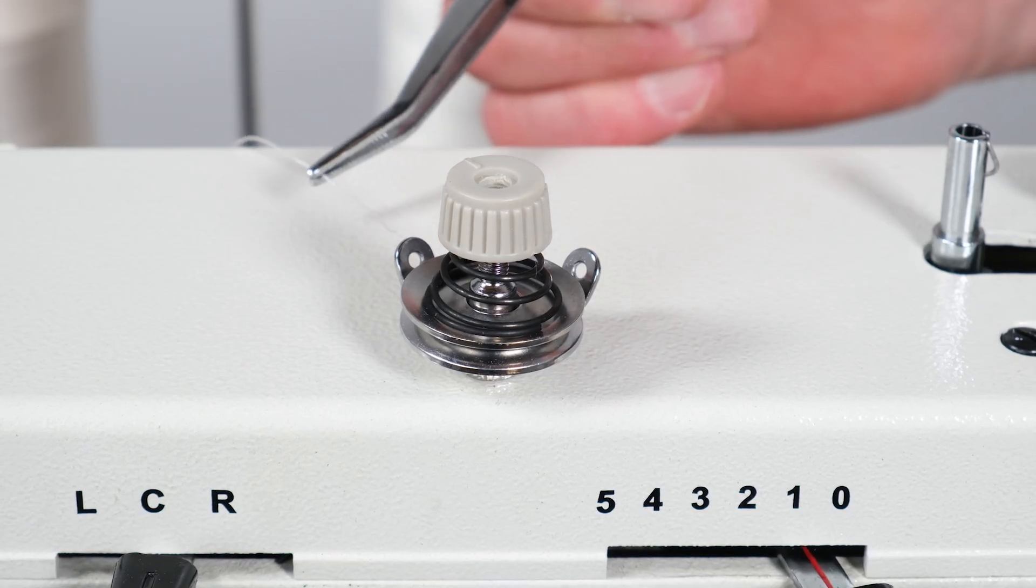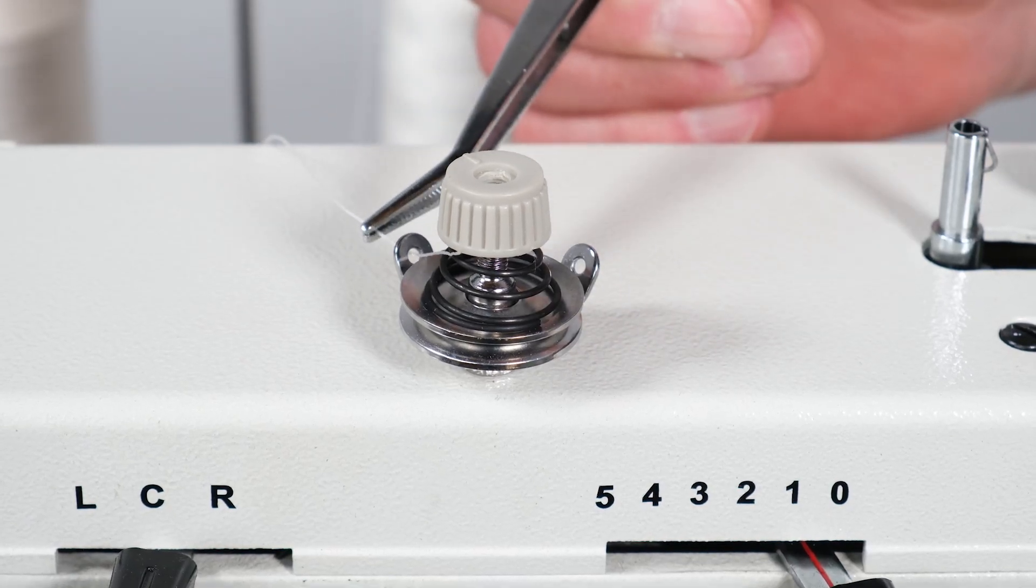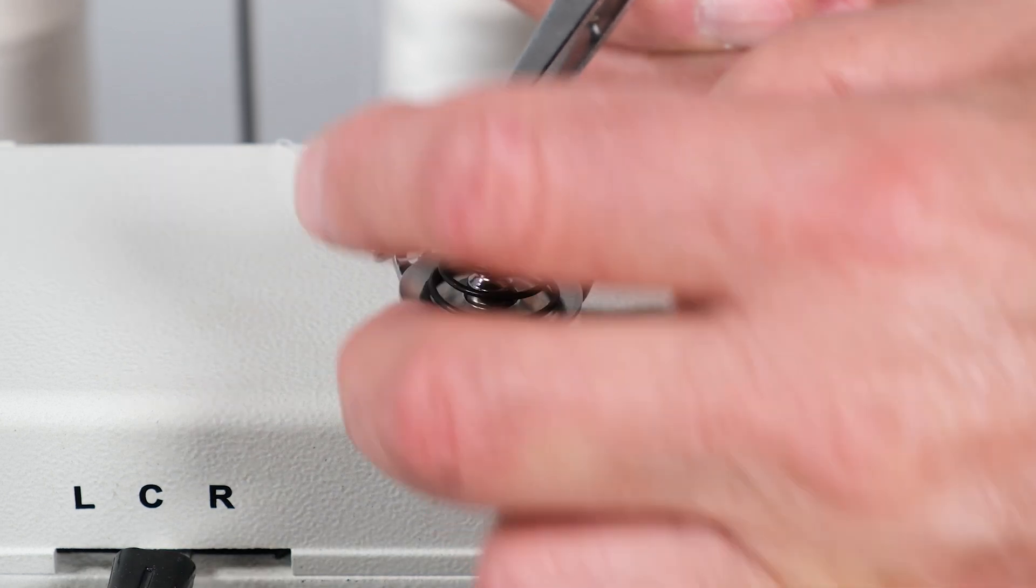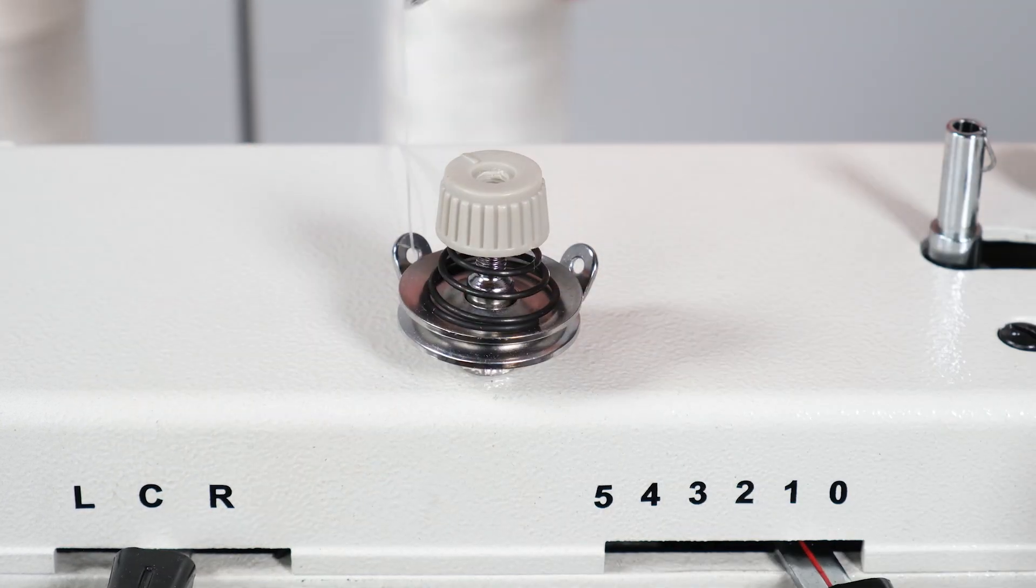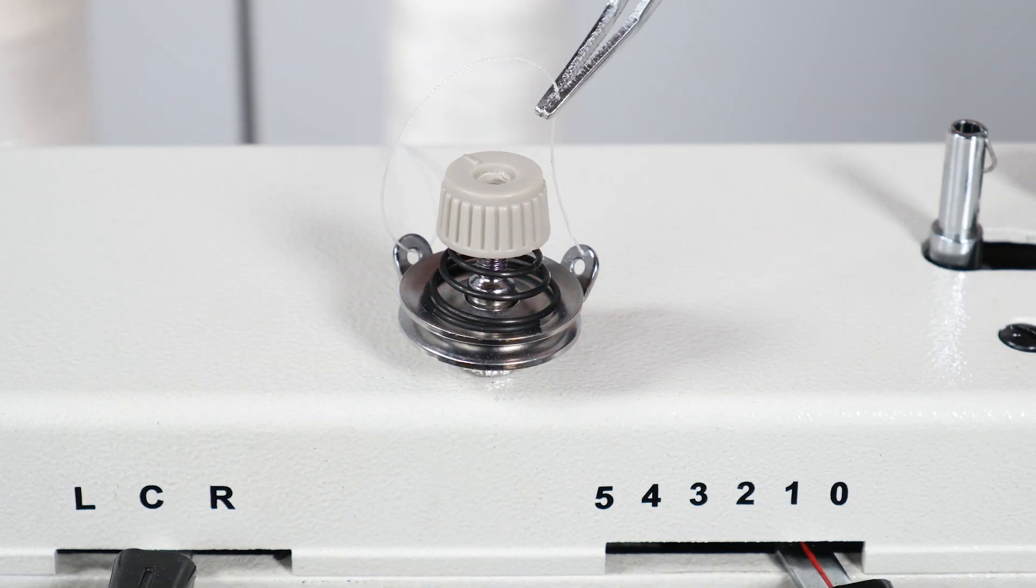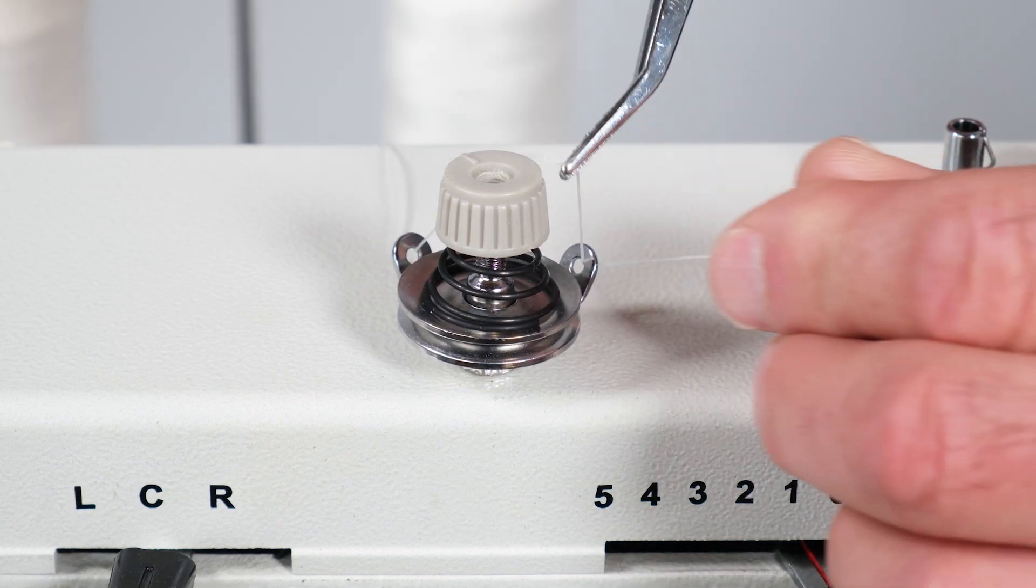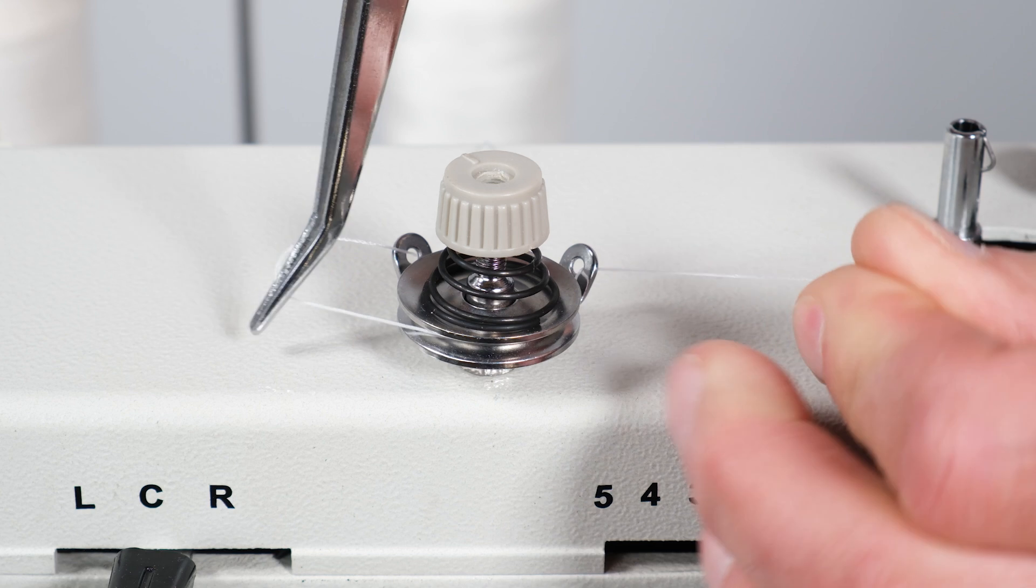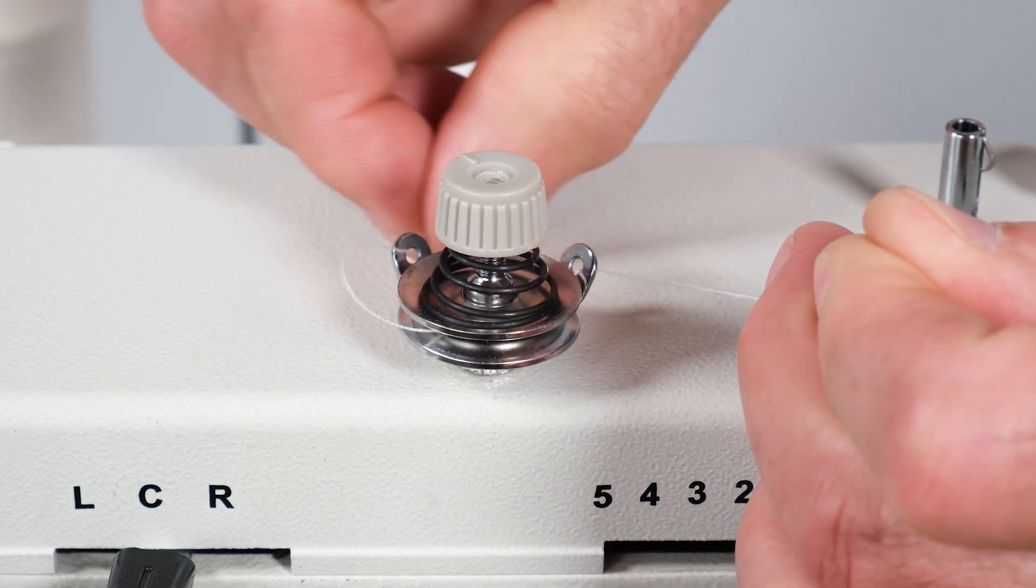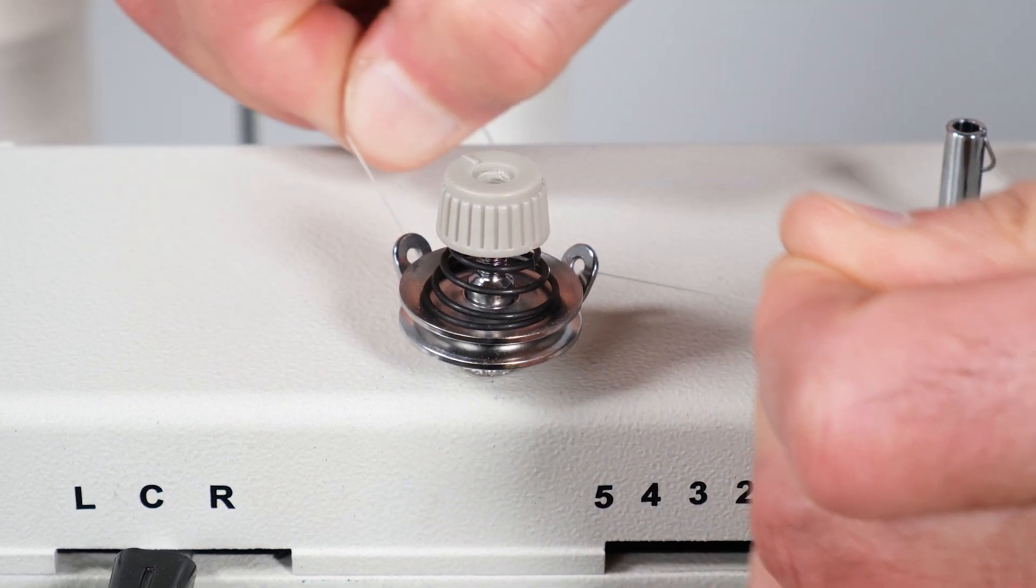Go under the first part of the tension assembly eyelet, go around it and through the top of the second eyelet, bring it in between the tension discs. Make sure it's nice and secure inside the tension discs.